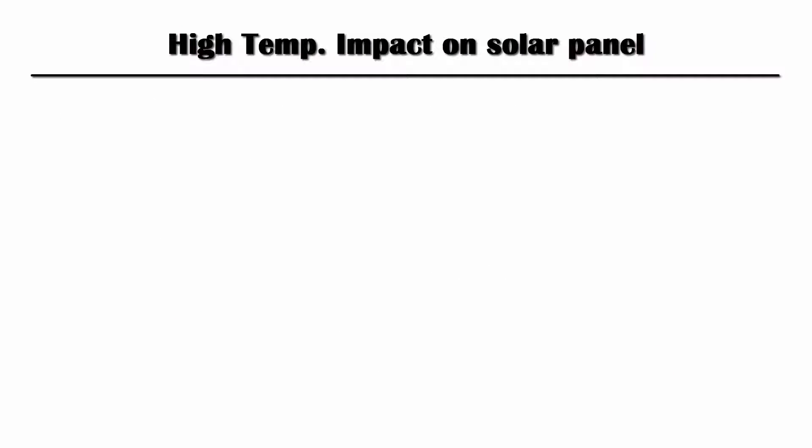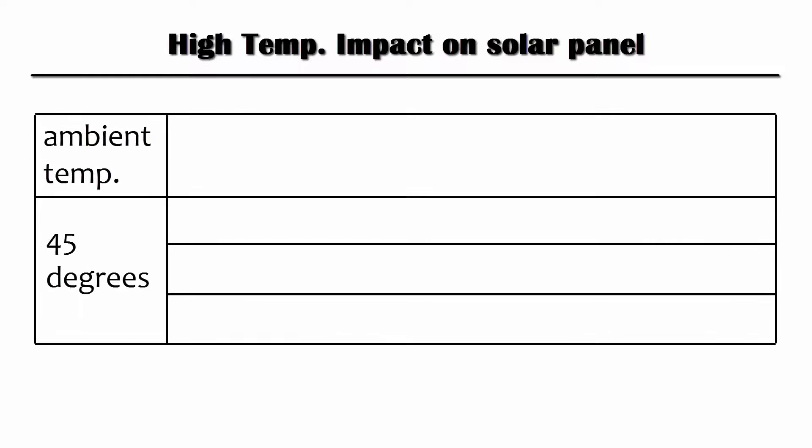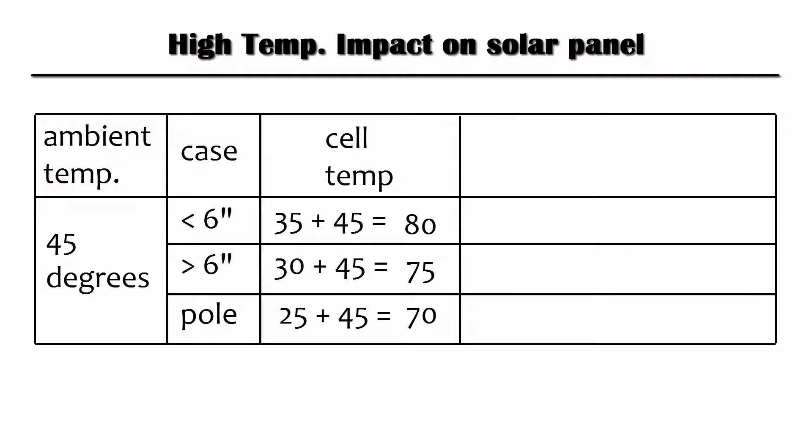If the highest temperature in your location is 45 degrees Celsius, the cell temperature will be 80 degrees, 75 degrees, or 70 degrees according to the type of mounting and the distance between the back of the module and the mounting surface.